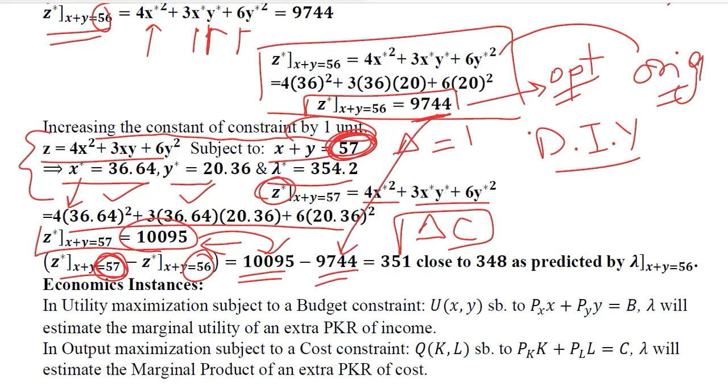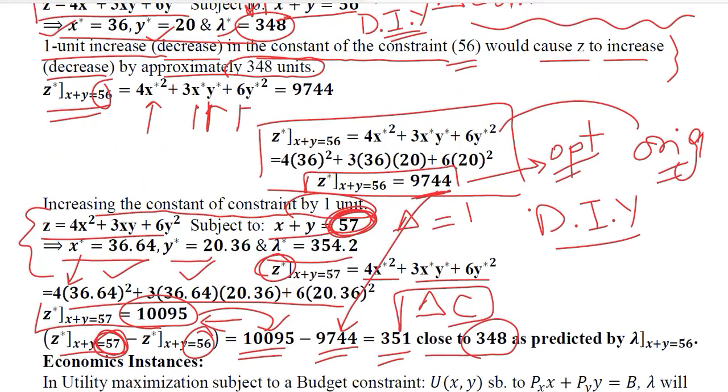The difference is 331 which is approximately close to 348 and 348 was actually the value of lambda here. So you see that it is getting verified that the value of lambda actually guides us about what will be the change in Z once if we bring one unit change in the value of the constraint and it is getting verified with some approximation.